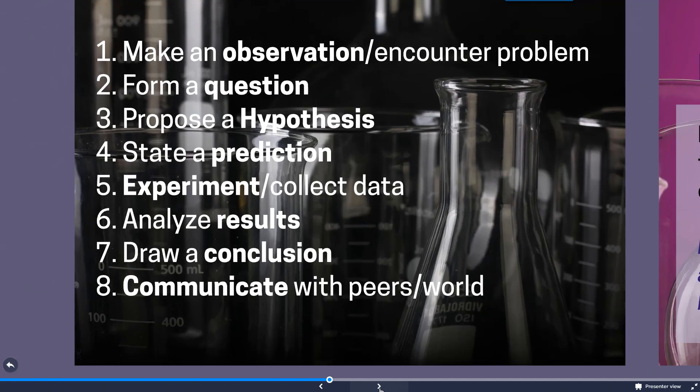So as far as the steps go within the scientific method, scientists typically are going to make an observation or they may encounter a problem that they want to look into a little bit further. They're going to form a question that is going to specifically tie in to the research they're conducting. They propose a hypothesis, state a prediction related to the hypothesis. They are then going to experiment and collect data, analyze the results, draw a conclusion, and communicate with their peers and the general outside community or world.